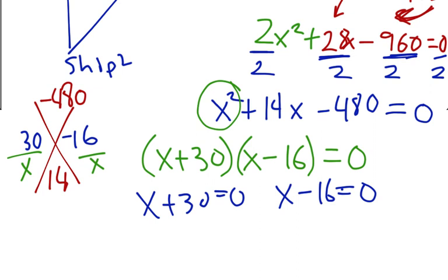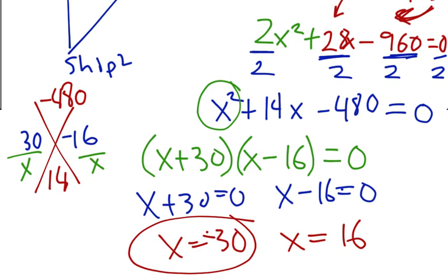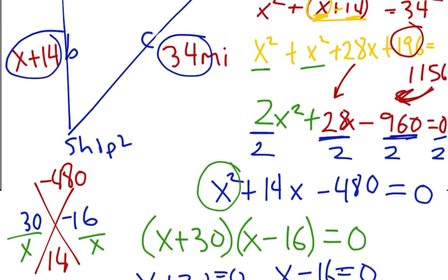So, I solve, and I have X equals negative 30. And X equals positive 16. Now, it doesn't make sense for us to have a negative distance of 30. So, our answer is most likely 16. But, we want to check that out to see if it actually makes sense.